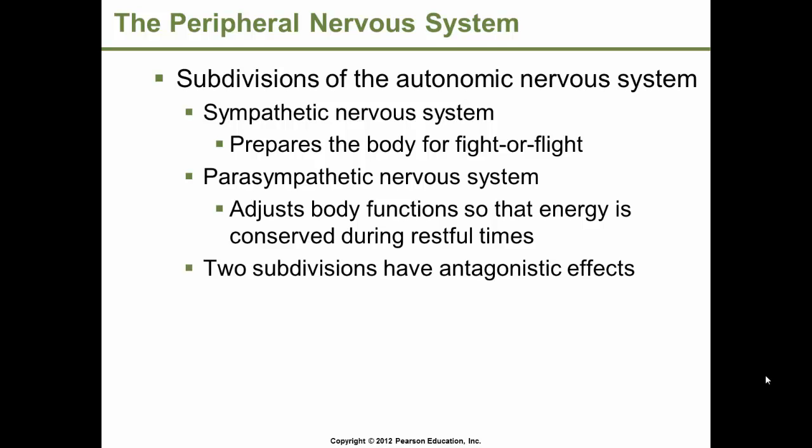The two subdivisions have antagonistic effects when innervating an organ. In the sympathetic, there is increased breathing rate, heart rate, blood pressure, and increased oxygen and glucose delivery to body cells to fuel the response. It also stimulates the adrenal glands to release hormones such as epinephrine and norepinephrine into the bloodstream to prolong the effects. If we're preparing for fight or flight, we're not really concerned about digesting food.